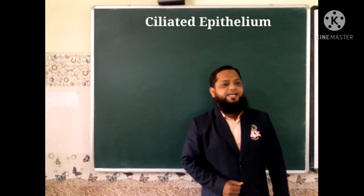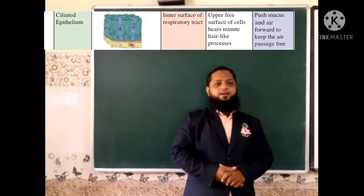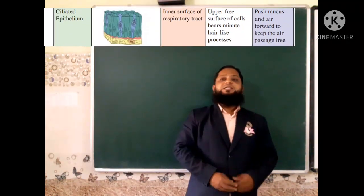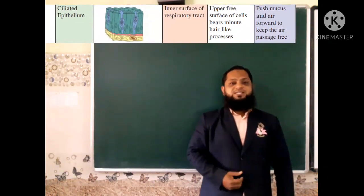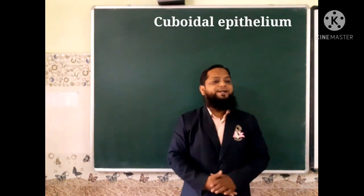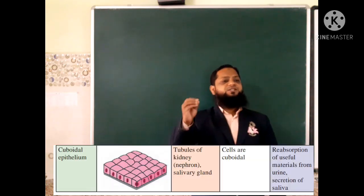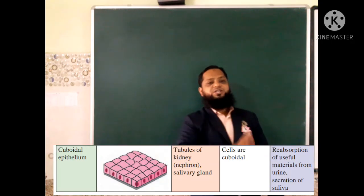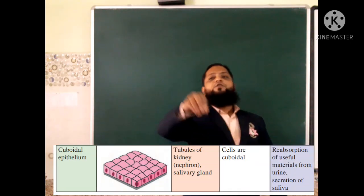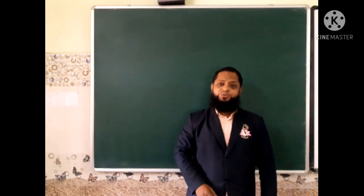Fifth is ciliated epithelium, found in the inner surface of the respiratory tract. The upper free surface of the cell bears minute hair-like processes. The main function is to push mucus and air to keep the air passage free. The sixth type is cuboidal epithelium, found in the tubules of the kidney (nephrons) and salivary glands. Cells are cuboidal in shape. The main function is reabsorption of useful materials from urine and secretion of saliva. This covers all types of epithelial tissue.